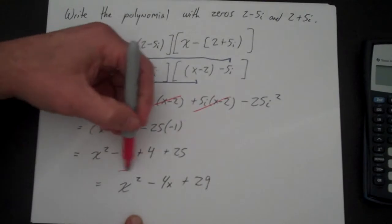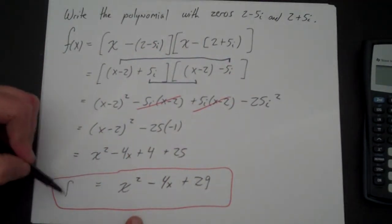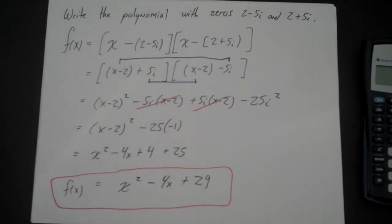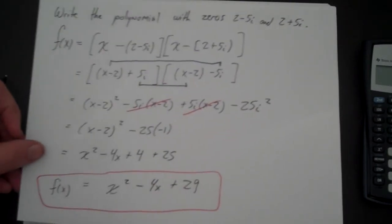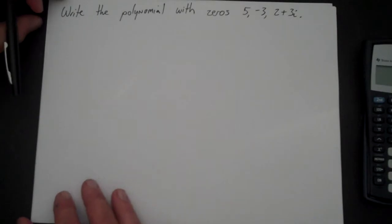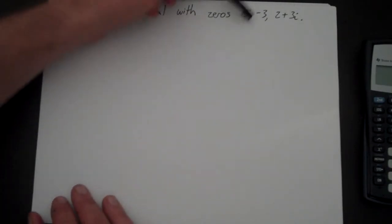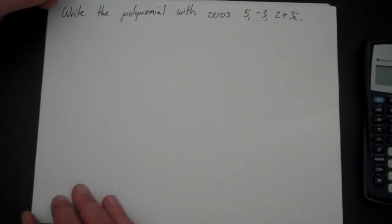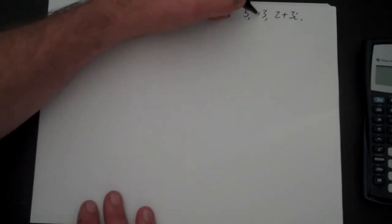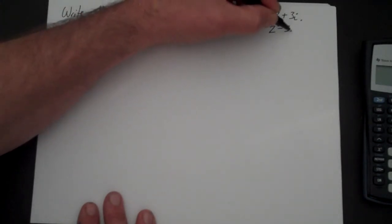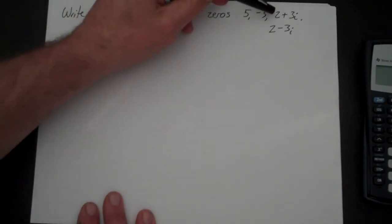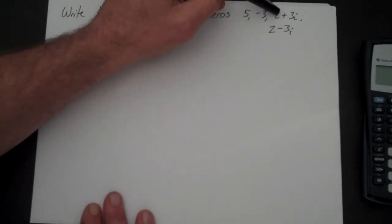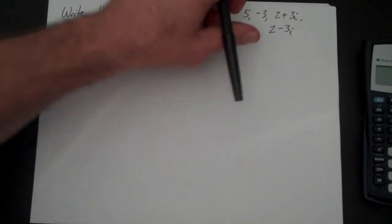My final answer is x squared minus 4x plus 29. Now, a very similar problem: here we have a polynomial with two real zeros and one imaginary zero. The very first step is that if 5, minus 3, and 2 plus 3i are zeros, then 2 minus 3i is also a zero, because if you have an imaginary zero with a real-valued polynomial function, you always have its conjugate as well.